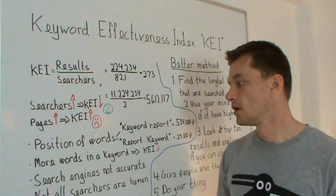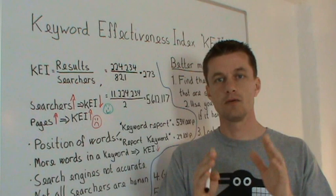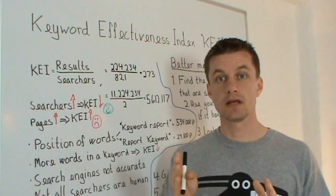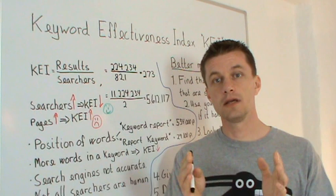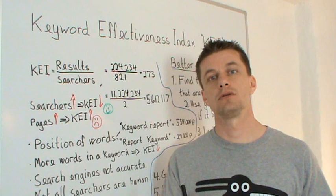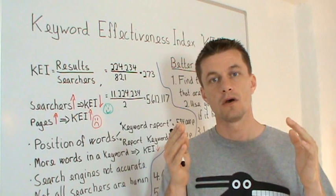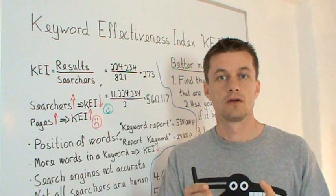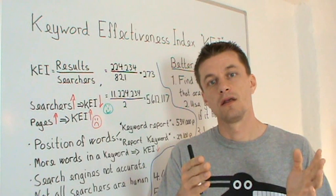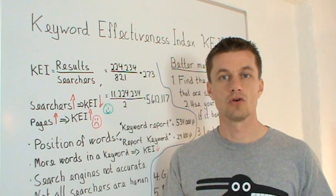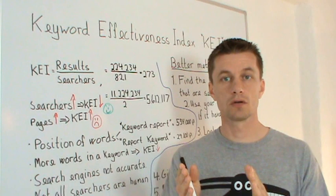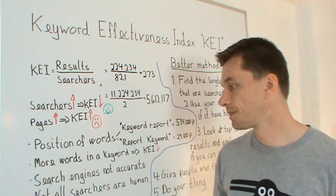Another thing is the number of words in your keyword. Imagine you have a keyword with six words in it and another keyword with three words, and they have the same KEI. The one with three words will probably have those keywords appear in many pages by accident — a lot more than the one with six words. It's much less likely to find all six keywords by accident in the index. So with more keywords you would expect a lower KEI, meaning you should be comfortable with a slightly higher KEI for a shorter search phrase, because that probably means less real competition.